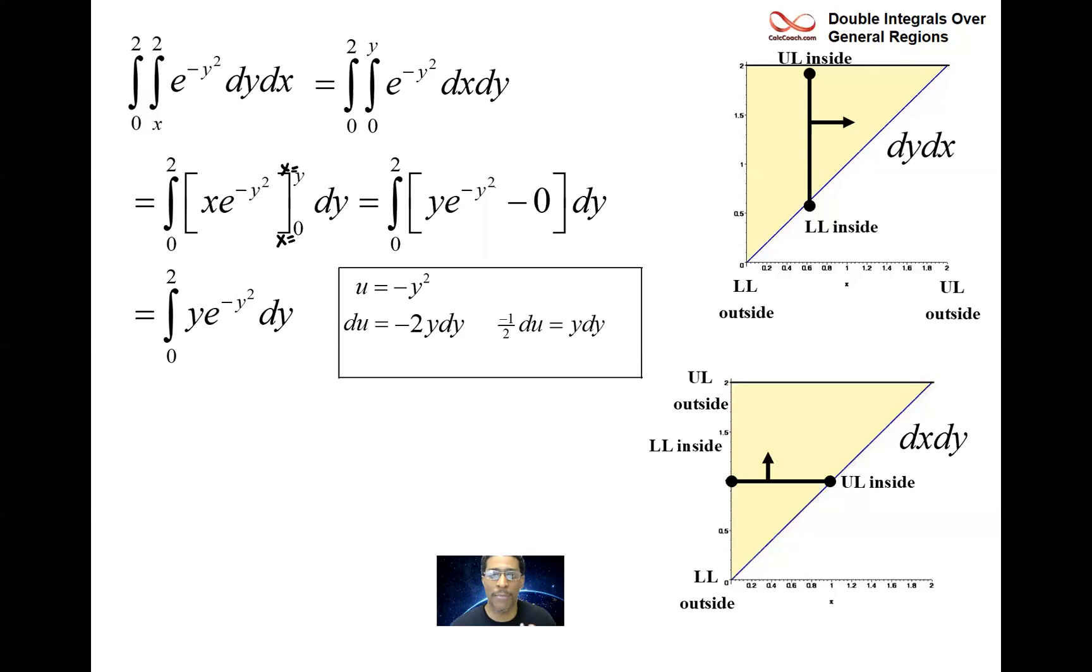The new integral becomes negative one half e to the u du. Antiderivative is e to the u with the negative one half multiplier. Go back into what u was. u was negative y squared. So we have negative one half e to the negative y squared as our antiderivative. And we're going to plug a two in and plug a zero in and we're all done with this question.